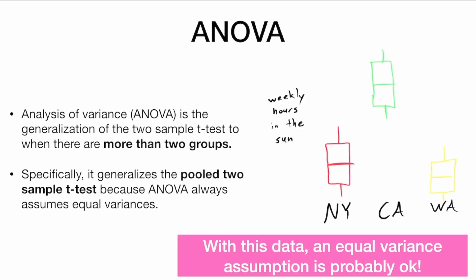ANOVA, or analysis of variance, is the generalization of the two-sample t-test when there are more than two groups. Specifically, it generalizes the pooled two-sample t-test because ANOVA always assumes equal variances. So with this data that we see here, all three groups look like they have equal variance. So ANOVA is probably okay.